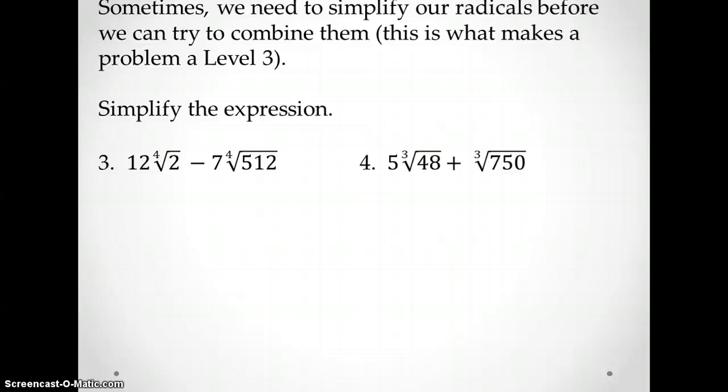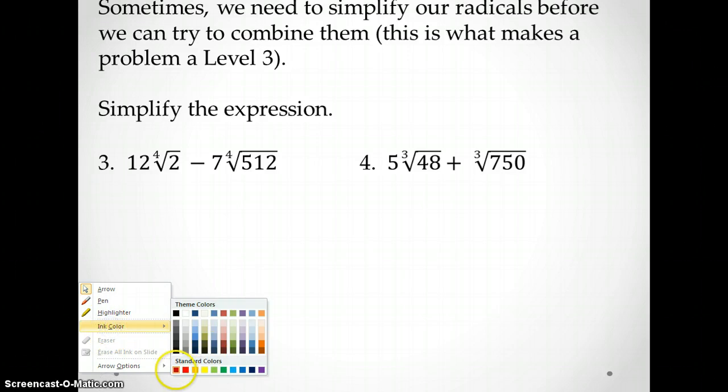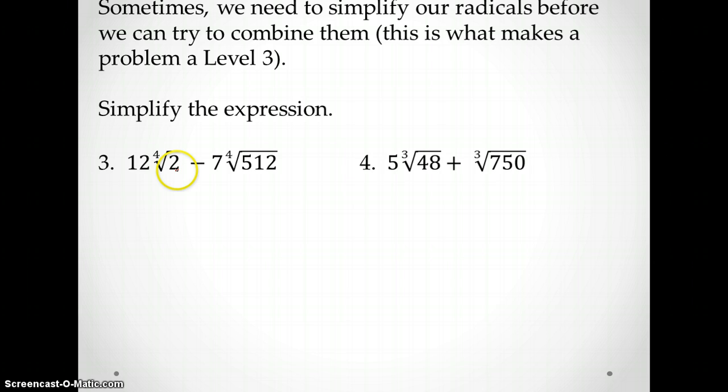Having to simplify it before you can combine your like radicals, that's what's going to take it from a level 2 to a level 3. This is a little bit higher level process. So if I look at this 12 fourth roots of 2, I can't simplify this at all. But over here, the fourth root of 512, I can simplify that. 256 goes into 512. You'll notice here we ended up with a fourth root of 2. That's a good sign that we're on the right track because that's what we're trying to match here. So using your charts, what's the fourth root of 256? It's 4.